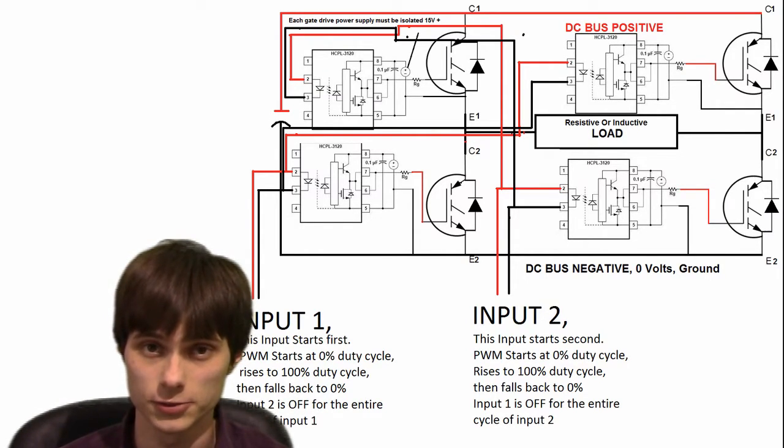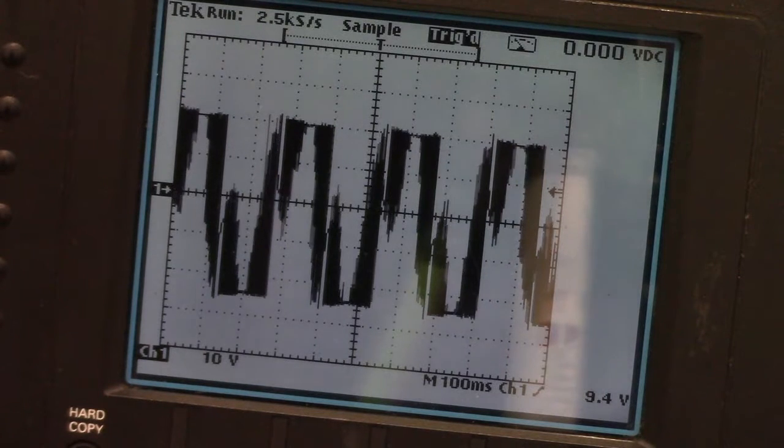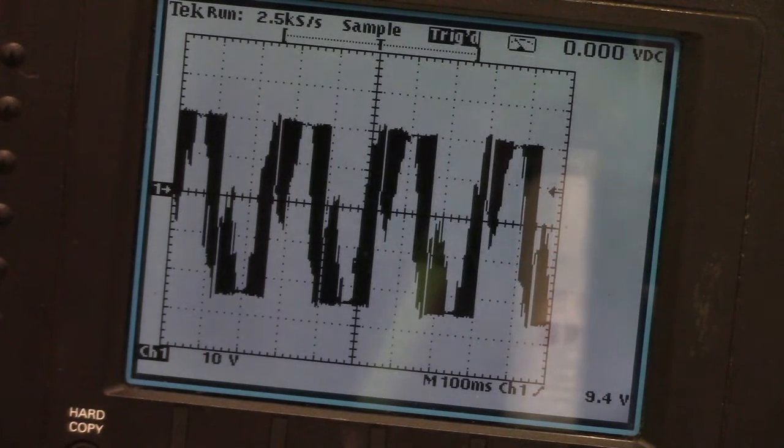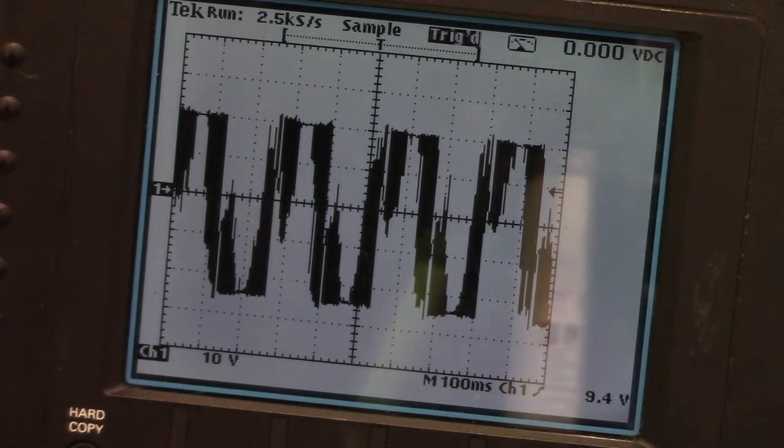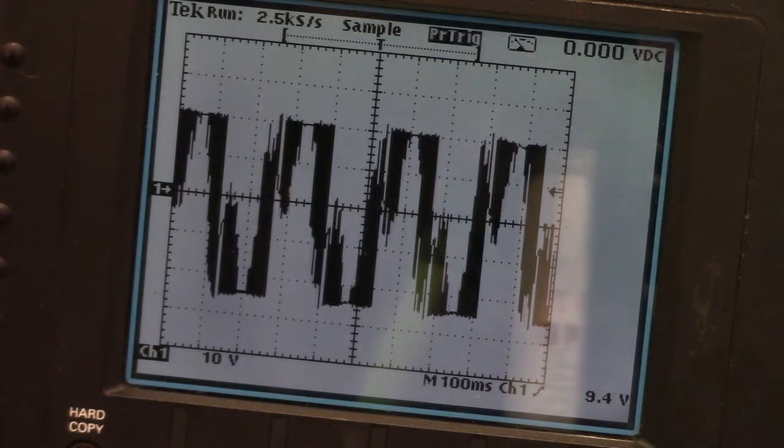And I say simulate, that's a loose term here because, well, let me show you. So this is the output of a full bridge pulse width modulated inverter. So like I said, not exactly a sine wave, but it's closer than a square wave.